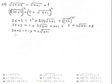Combine like terms: 2x minus x is x, and 3 minus 2 is 1, so x plus 1 equals 2 times the square root of x plus 1. Square both sides again to eliminate the second radical.